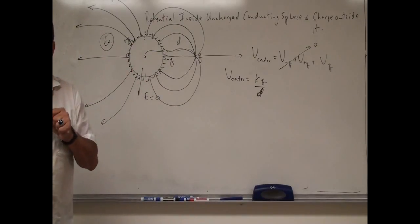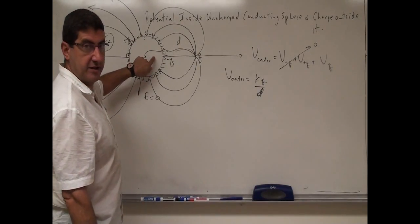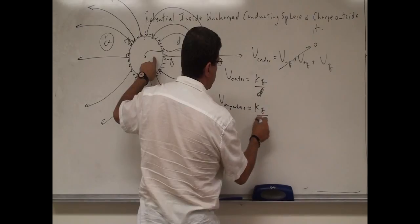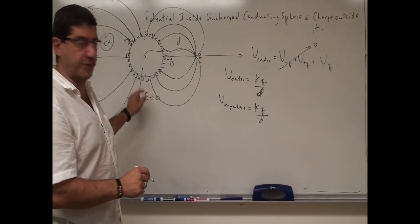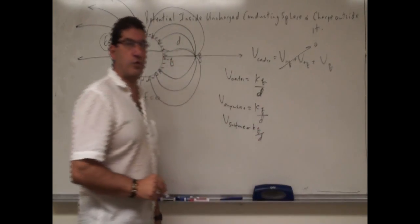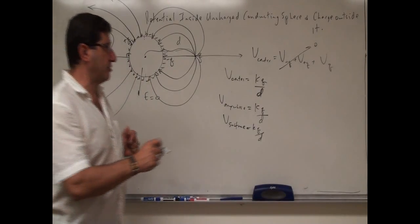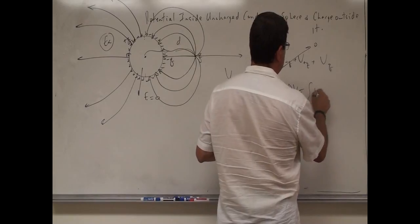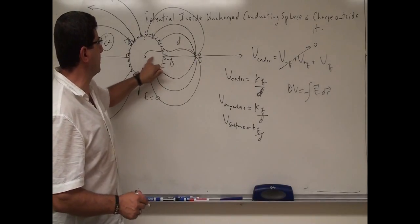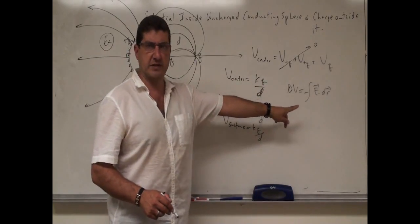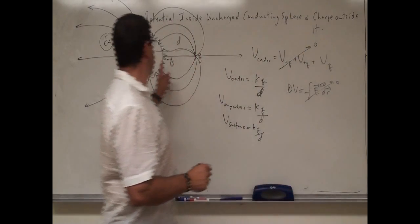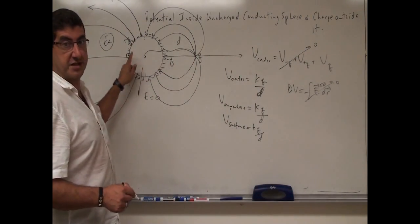Therefore I can make the argument that the potential anywhere inside is also kQ over D, including the potential at the surface itself. The potential difference between any two points inside a conducting sphere equals the integral of negative E dot dr. Since the electric field is zero inside, this integral is zero, meaning the potential everywhere inside — and at the surface — is the same constant value.